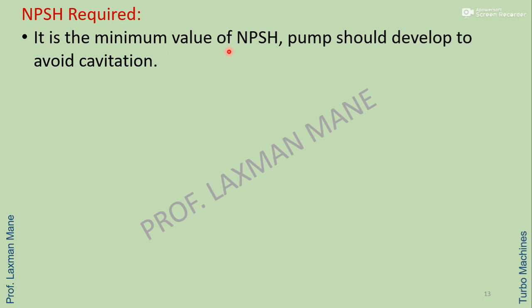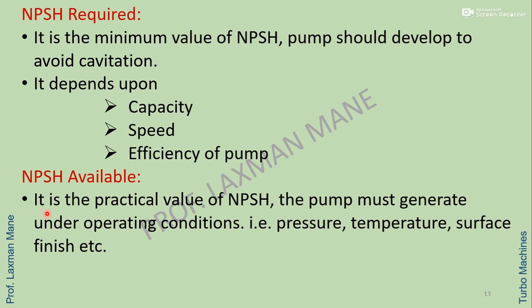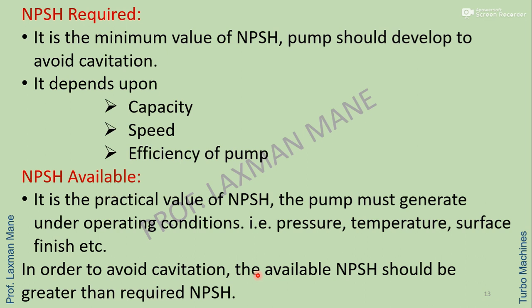NPSH required is the minimum value of NPSH that the pump should develop to avoid cavitation. It depends upon the capacity, speed, and efficiency of the pump. NPSH available is the practical value of NPSH the pump must generate under operating conditions, i.e. pressure, temperature, surface finish, etc. In order to avoid cavitation, the available NPSH should be greater than the required NPSH.